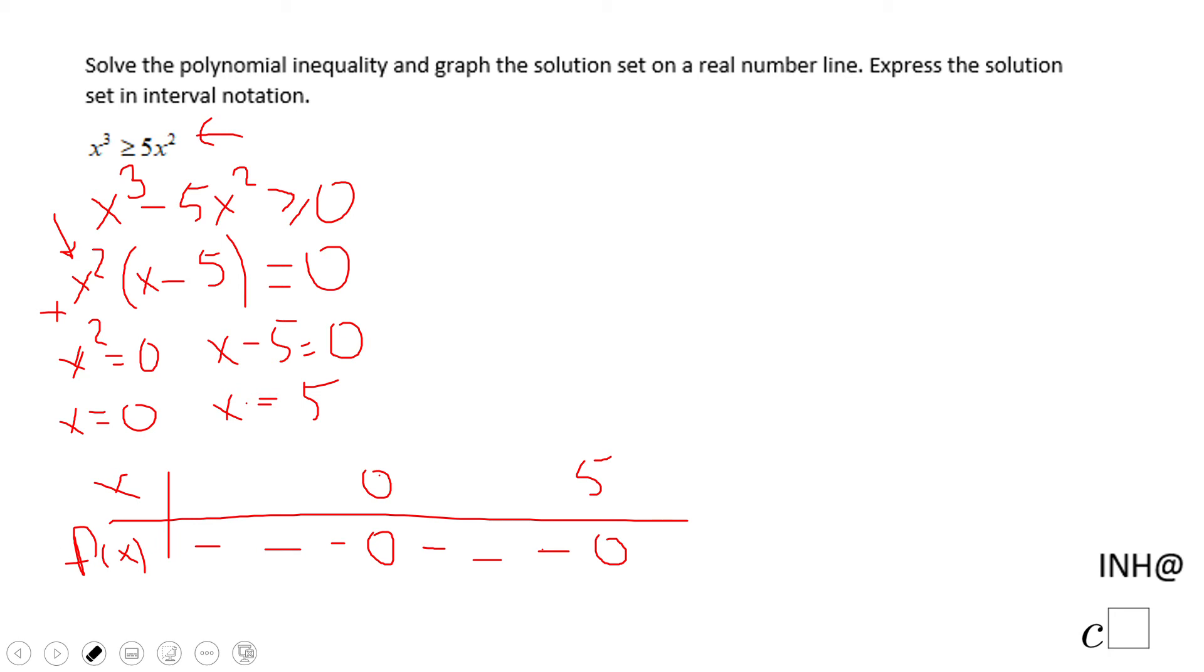And we have one more interval greater than five. So in this moment, x - 5 is also positive. So here we do have a change of the sign. The polynomial function is positive.